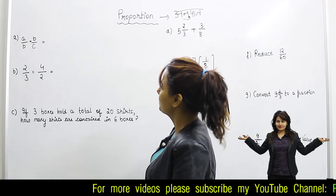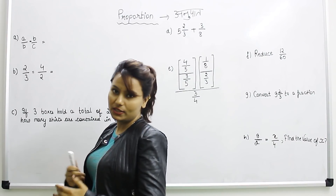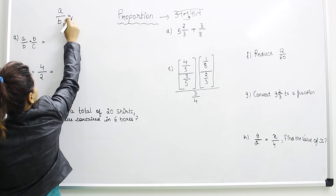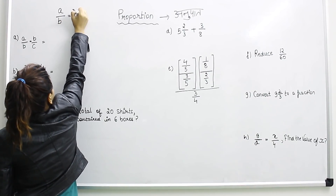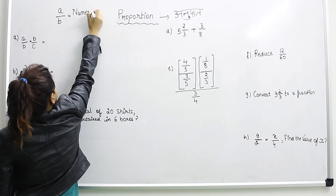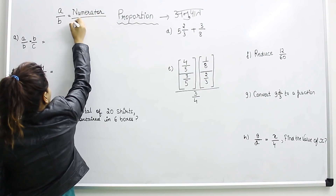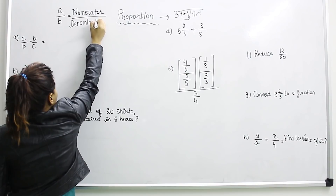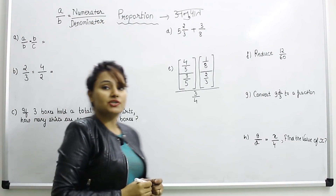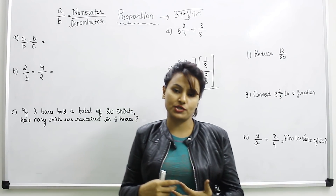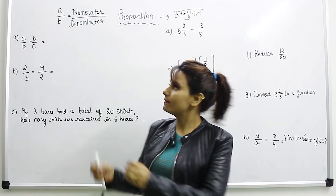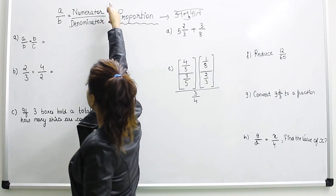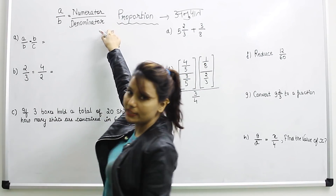The first question is A by B is equal to B by C. First of all, let me tell you: in A by B, the number shown above is called the numerator, and the number below is called the denominator. I have told you about numerator and denominator in chapters related to decimal, fraction, and proportion. Please keep in mind that the number written above is always the numerator and the one below is always the denominator.